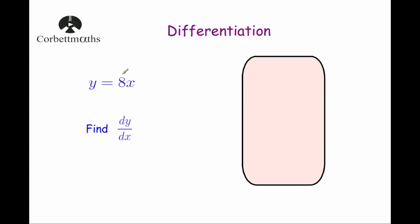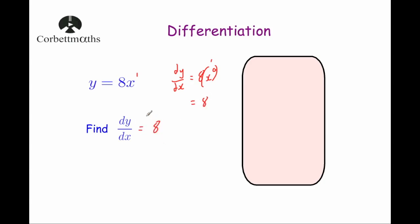Our next question: we've been given y equals 8x. Remember, dy by dx is the gradient function — it lets us find the gradient at any particular point. This is in the form y equals mx plus c, so it's a straight line with a gradient of 8, meaning dy by dx equals 8. Let's see why: y equals 8x is really 8x to the power of 1. Bringing the power down: 8 times 1 is 8, then x to the power of 0. Since anything to the power of 0 equals 1, that gives 8 times 1 equals 8. So dy by dx equals 8.